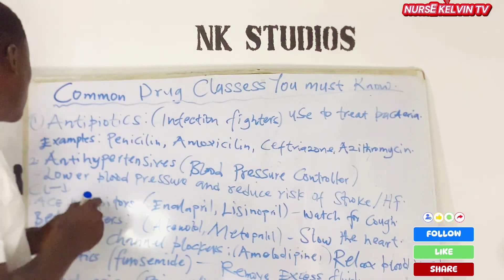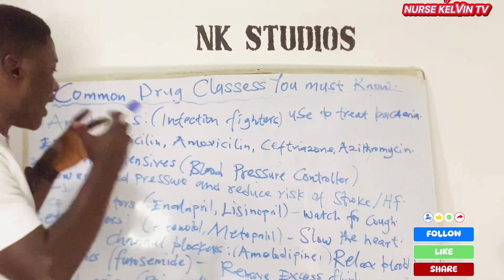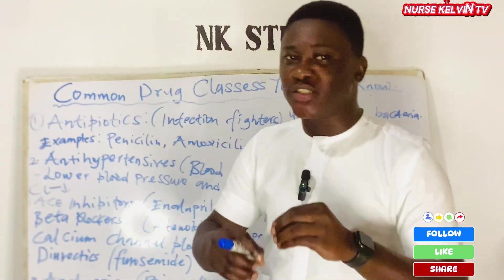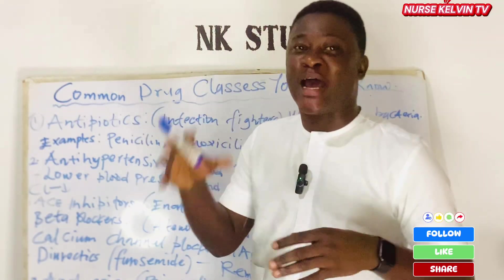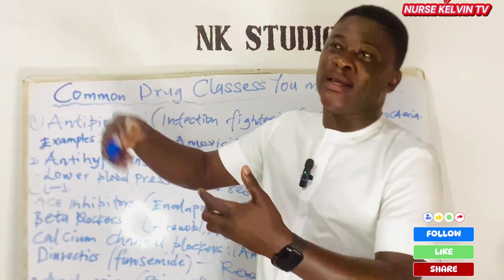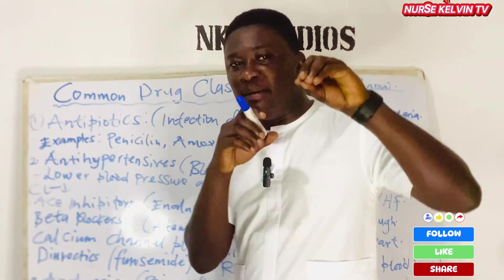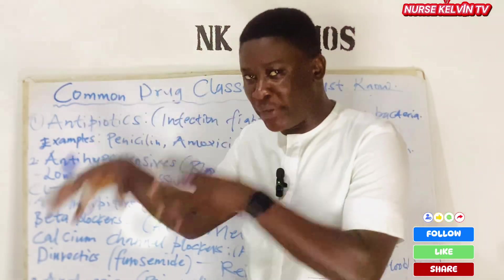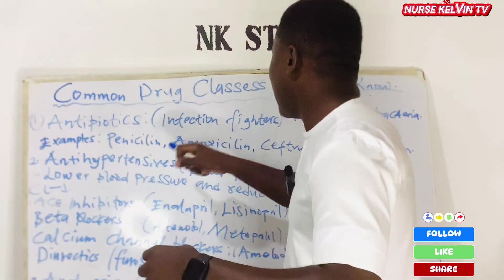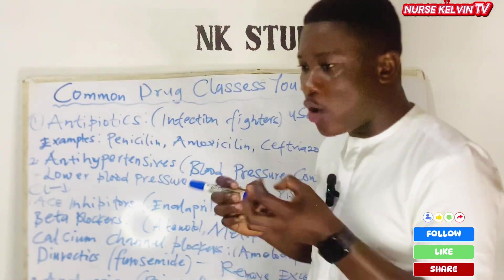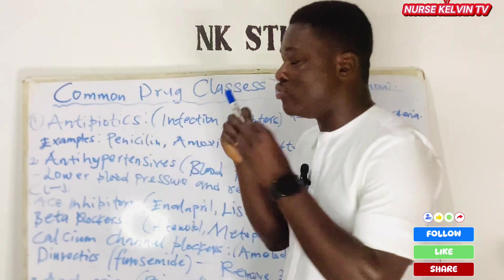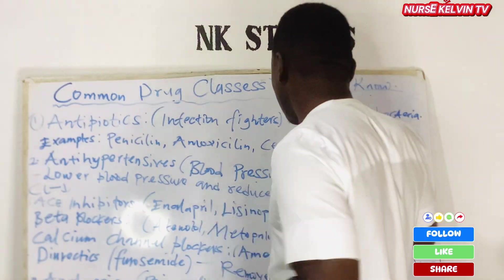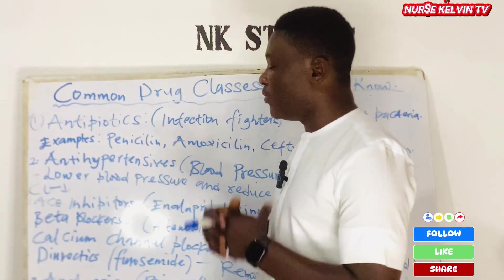Let's move to the second class known as anti-hypertensive drugs. Anti-hypertensive medications are drugs used to control blood pressure. When a patient has high blood pressure or is a hypertensive patient, these are the medications we use. They are used to lower blood pressure and reduce the risk of stroke or heart failure.